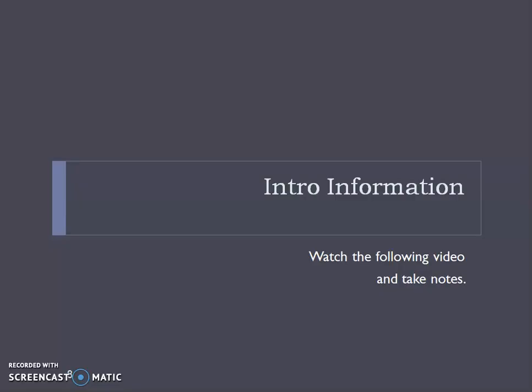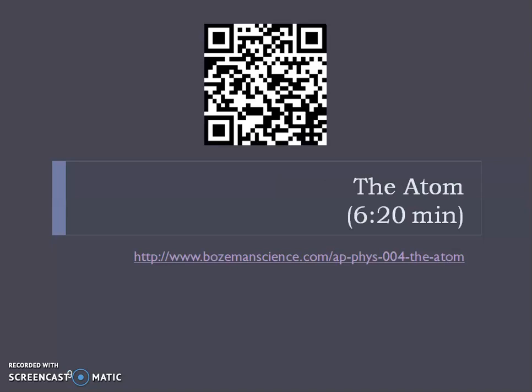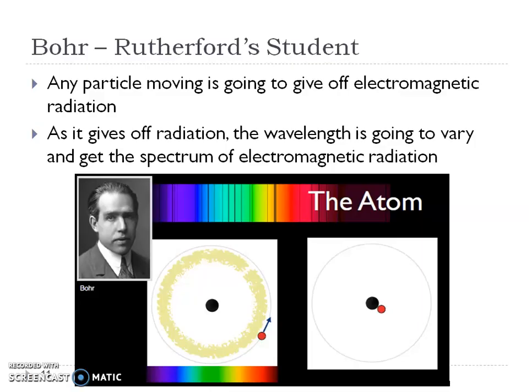So you should have watched this intro information on the atom from Boseman Science. And here are my notes. Again, I'm going to go through these rather quickly because you should have looked at them yourself. So again, this Bohr guy, he was actually Rutherford's student. So now remember, Rutherford came up with the nucleus and the fact that the atom is mostly empty space because of his gold foil experiment.